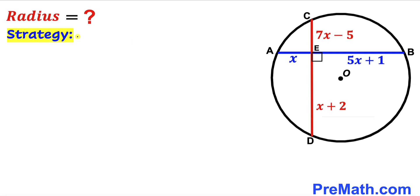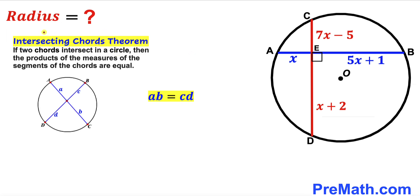Here's our action plan. Before we can calculate the radius of this circle, we must find the value of x. Let's recall the intersecting chords theorem: if two chords intersect inside a circle, then the product of the measures of the segments of one chord equals the product of the segments of the other chord. For chords AC and BD intersecting at a point, we get A times B equals C times D.